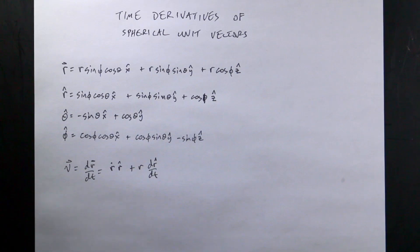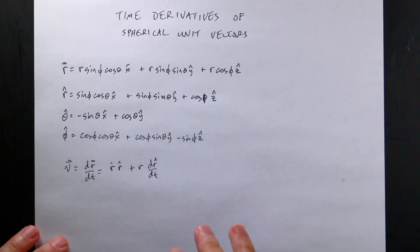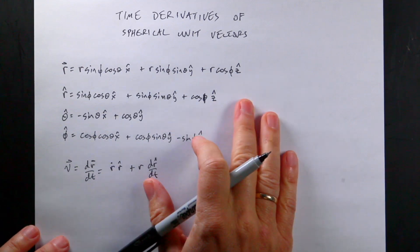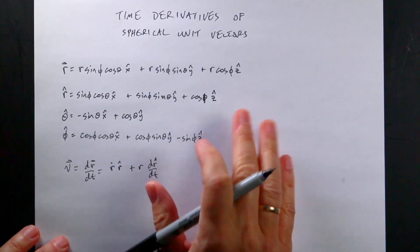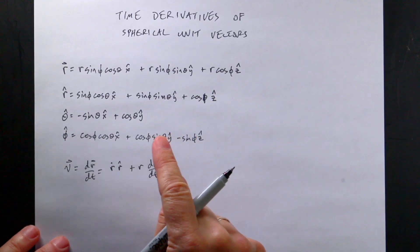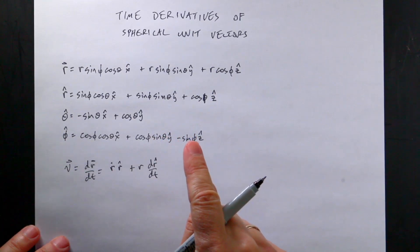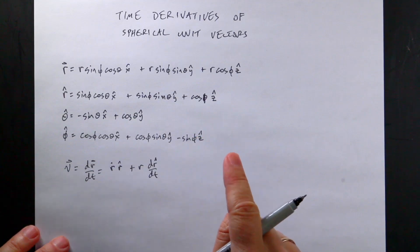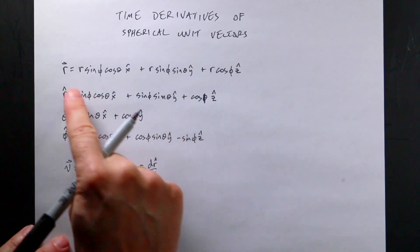This is part two. What I'm trying to do is determine the velocity and acceleration vectors in spherical coordinates. In part one, I defined spherical coordinates, and most importantly, I wrote the position vector in terms of the spherical variables with the Cartesian unit vectors. And that's pretty important.